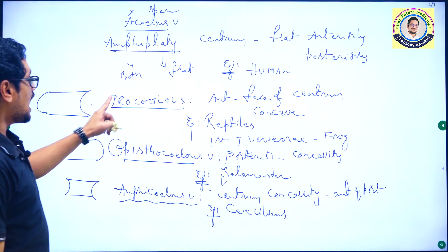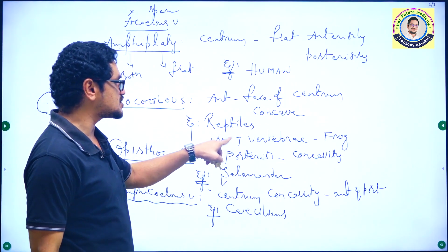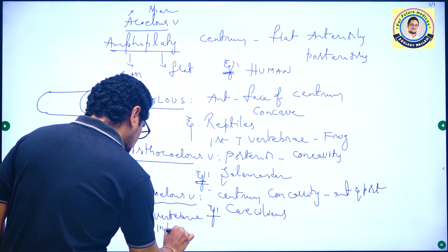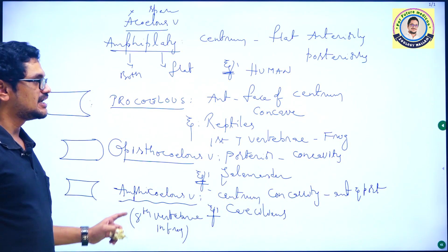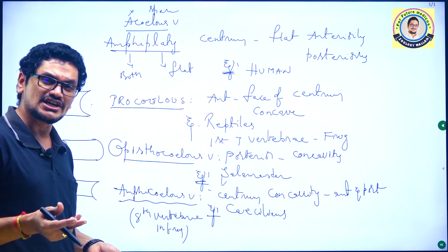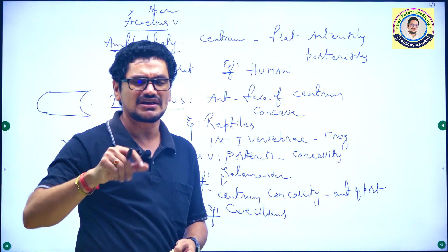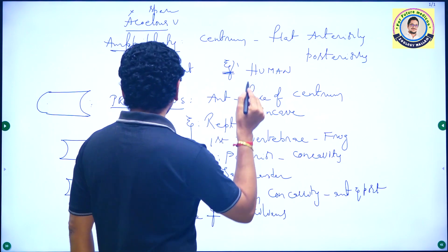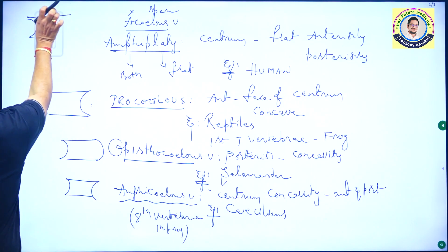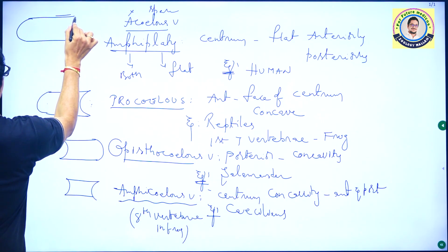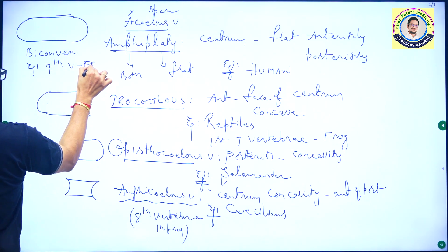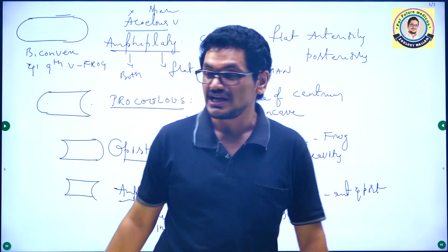To summarize frog vertebrae: amphicoelous, opisthocoelous, and procoelous types exist. In frogs, the first seven vertebrae are procoelous, the eighth vertebra is amphicoelous. The tenth vertebra is the urostyle — the last vertebra. The ninth vertebra has a very special quality — it is biconvex. So the ninth vertebra of frog is biconvex.